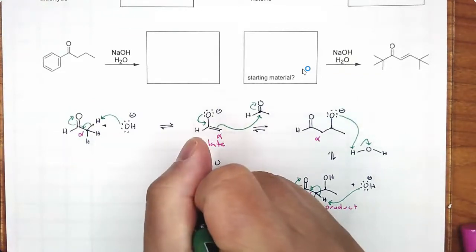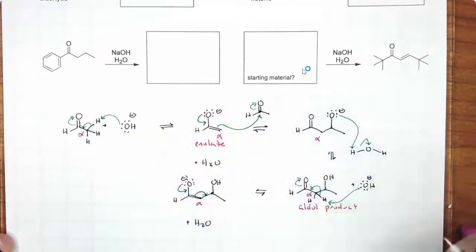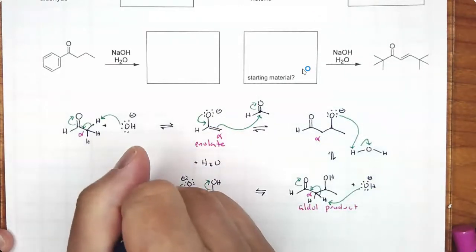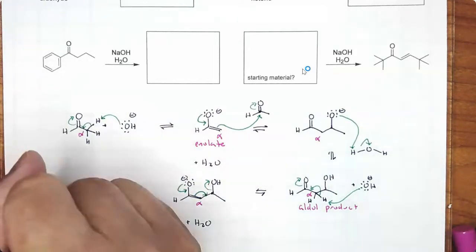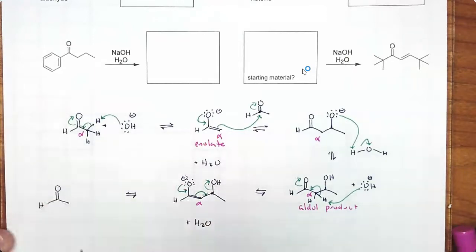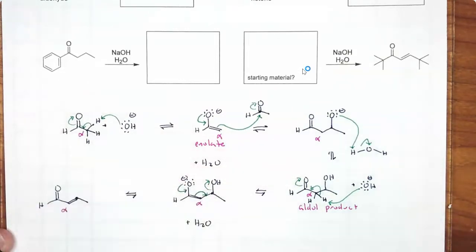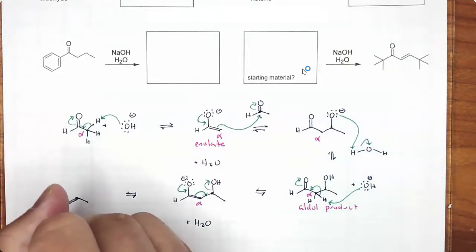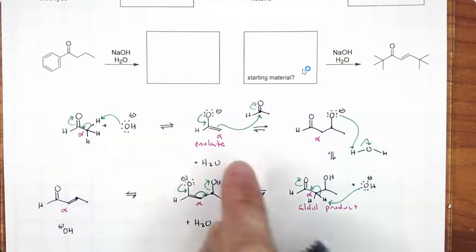Next, we're going to bring this lone pair down, jump this double bond to the right, and kick it out. Look what you get — you get the carbonyl, and you make a double bond between the alpha and the dot. You also kicked out OH-, and that's why this is base-catalyzed, because now that base can continue the process over again.